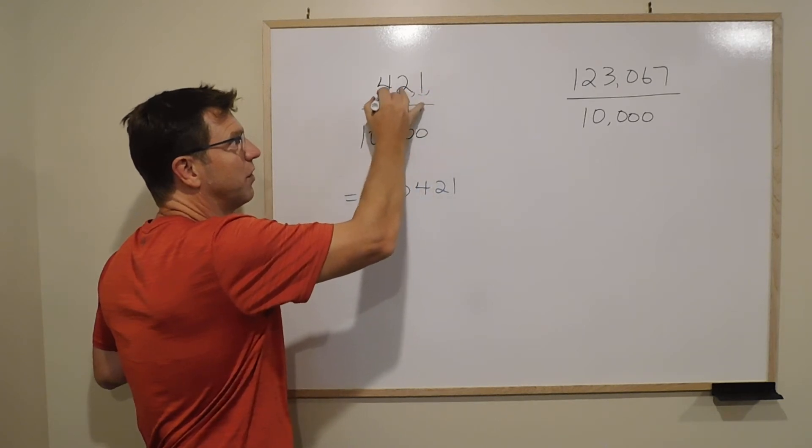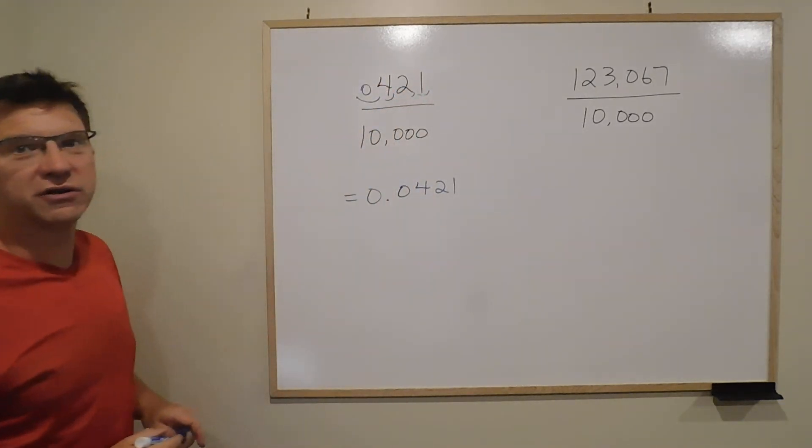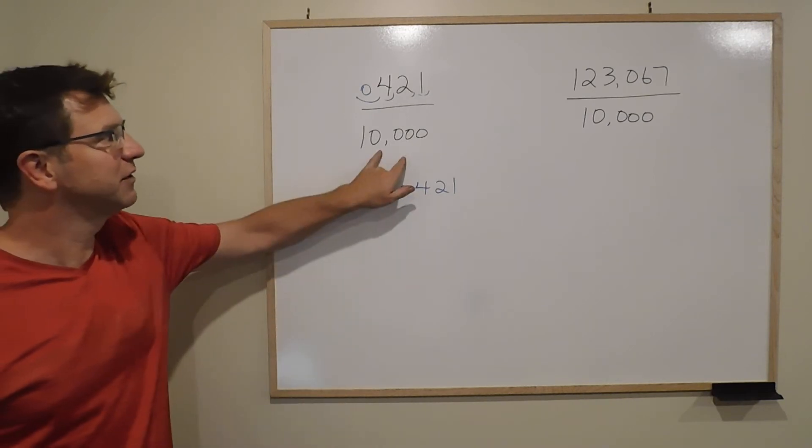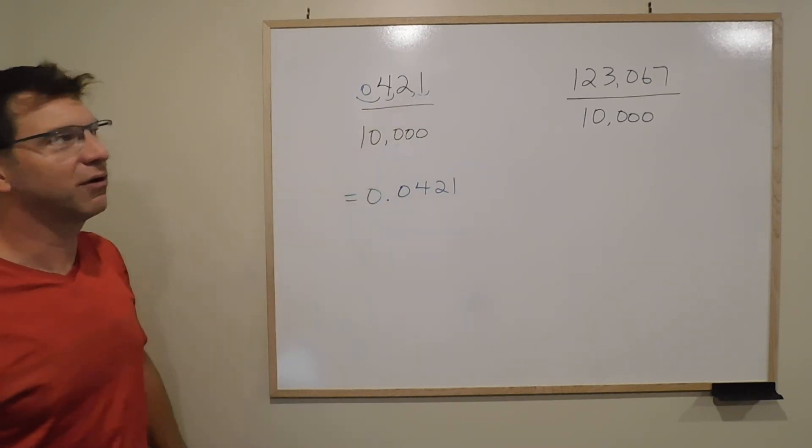One, two, three, four. You need to add a zero. So that's the connection. There's four zeros. When you do the division, you're going to end up with four decimal places.